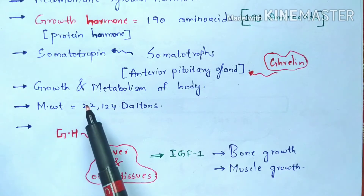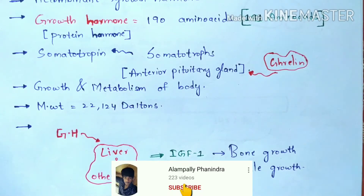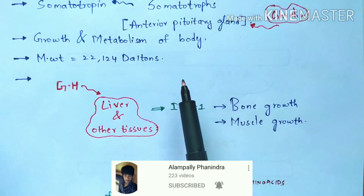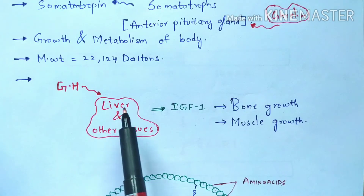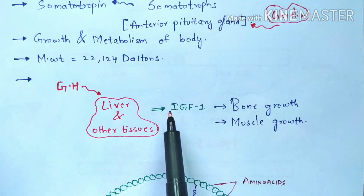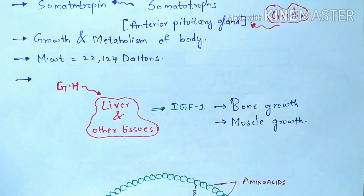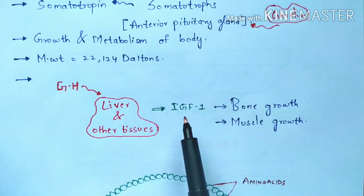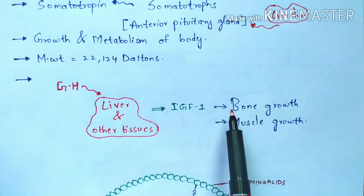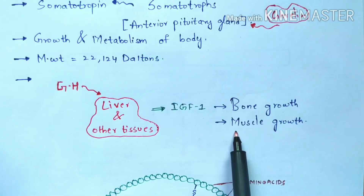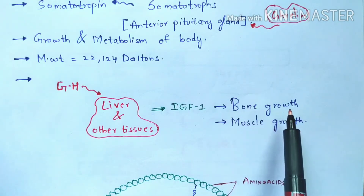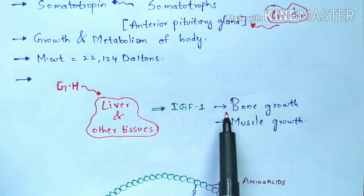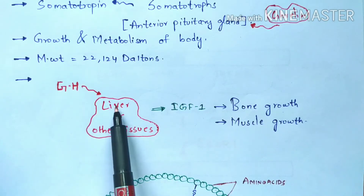The molecular weight of the growth hormone is 22,124 daltons. Once the growth hormone is secreted from the anterior pituitary gland, it acts upon the liver and other tissues. Those tissues then produce IGF-1 (Insulin-like Growth Factor 1), which mainly helps in the development of bone growth and muscle growth. This function is carried out by IGF-1, which is produced from the liver and other tissues stimulated by the growth hormone.